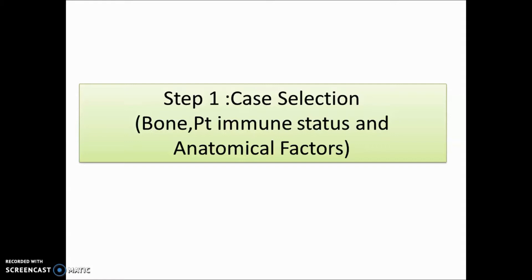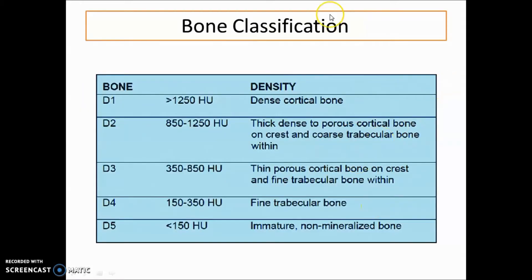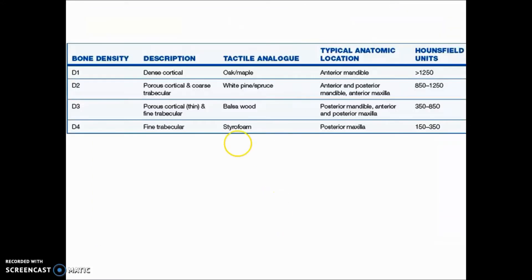The first step involves bone classification by density, D1 to D5. D1 is above 1250 Hounsfield units — dense cortical bone. D2 is 850–1250 HU — thick dense to porous cortical bone on the crest with coarse trabecular bone within. D3 is 350–850 HU — thin porous cortical bone with fine trabecular bone. D4 is fine trabecular bone. D5 is immature, non-mineralized bone.